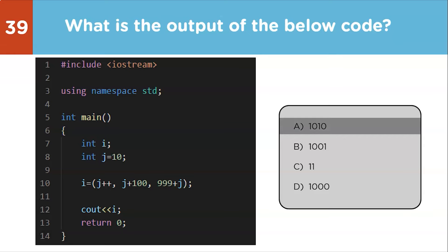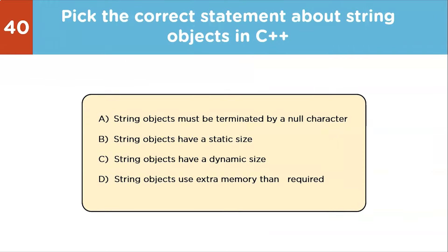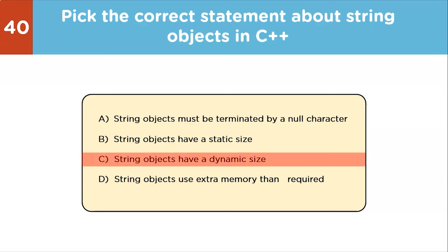The last question: pick the correct statement about string objects in C++. Options are: A) must be terminated by a null character, B) have a static size, C) have a dynamic size, D) use extra memory than required. The correct answer is C — string objects have dynamic size. They are dynamic in nature, meaning their size varies as their value changes, so they don't use any extra memory.